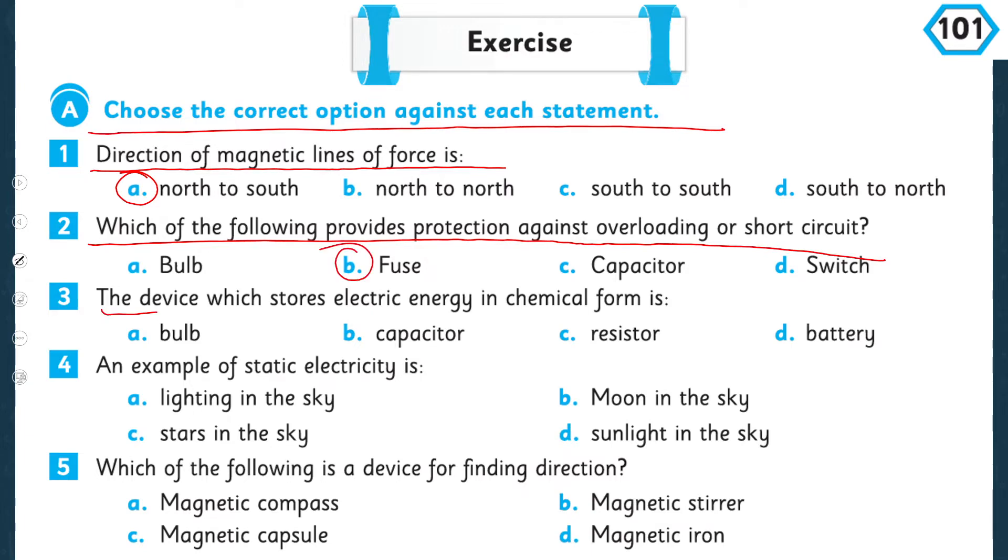Which of the following provides protection against overloading or short circuit? That is bulb, fuse, capacitor, or switch. That is a fuse. The device which stores electric energy in chemical form is: bulb, capacitor, resistor, battery. That is a battery. Number four is: an example of static electricity is lightning in the sky, moon in the sky, stars in the sky, sunlight in the sky. So that is lightning in the sky.